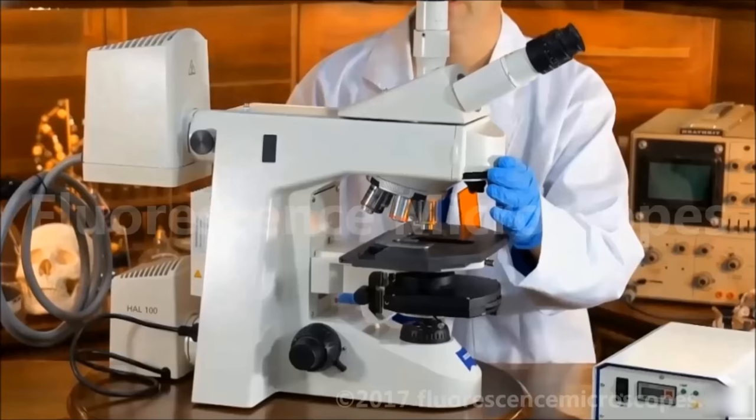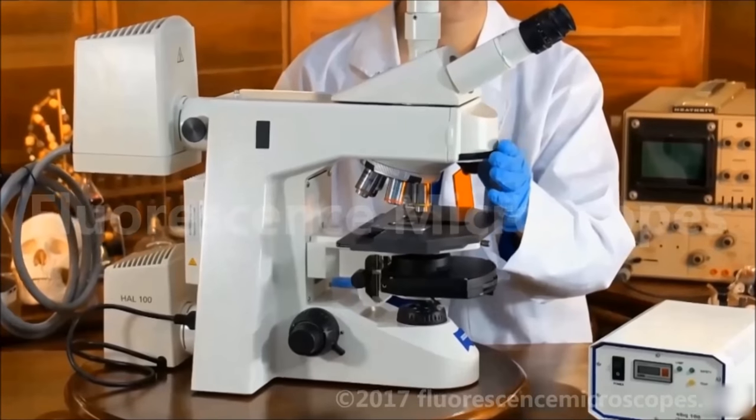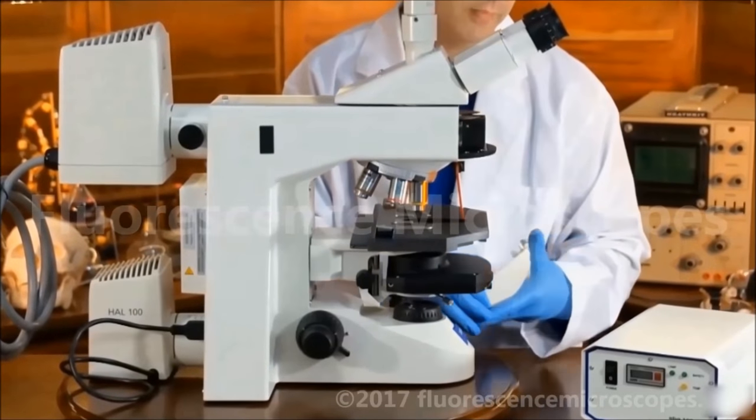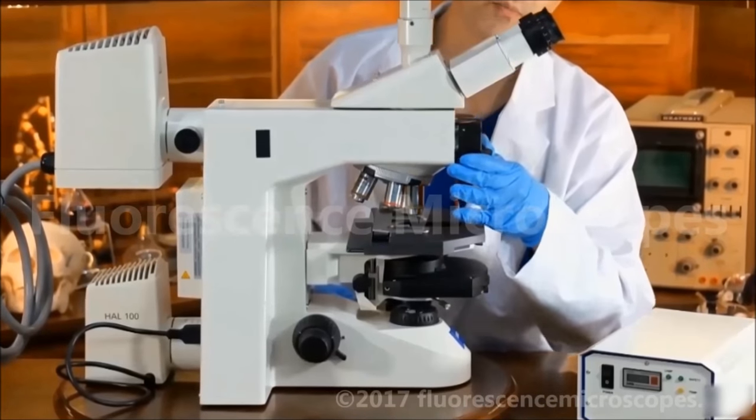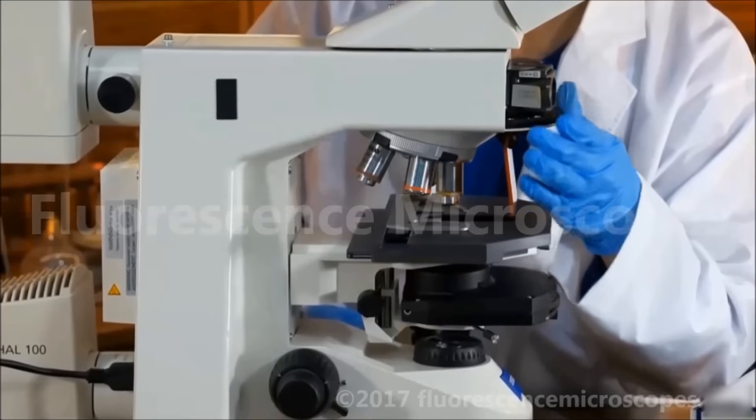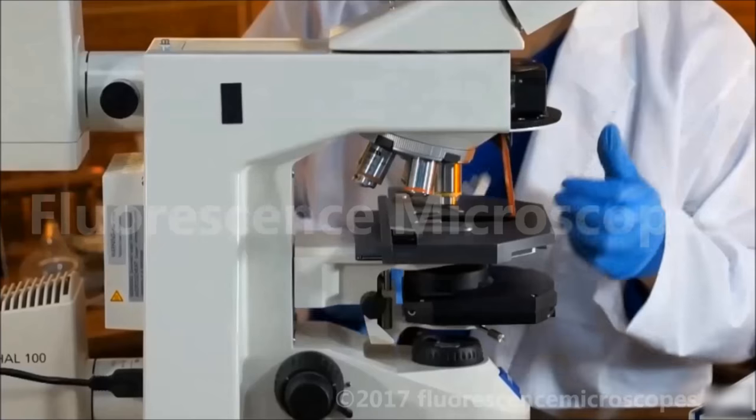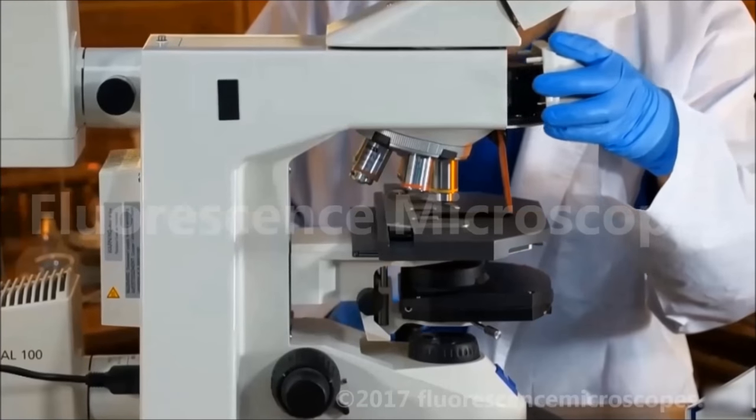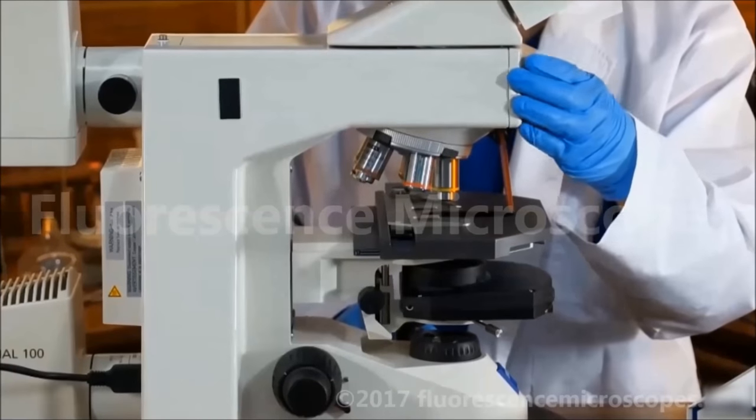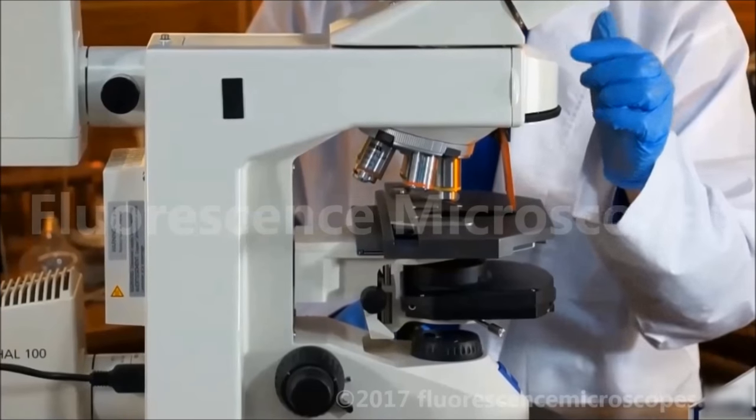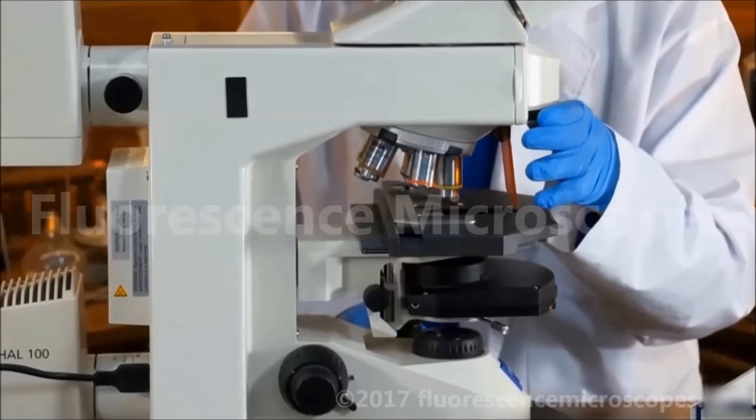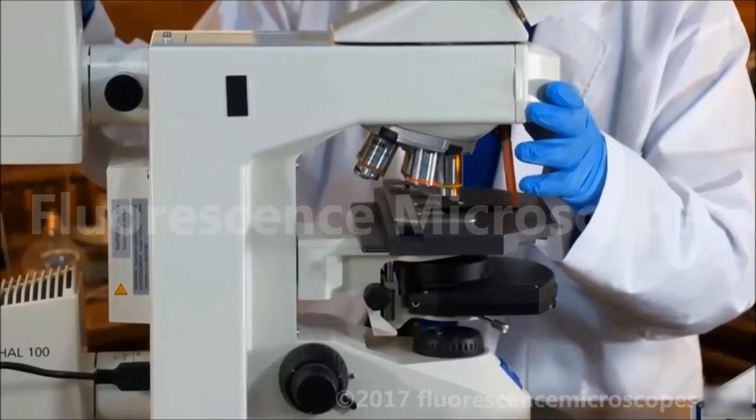Next, we have fluorescence cubes, dichroic cubes, inside the cube holder. There are 3 cubes plus a dark field. The dark field setting is also good for bright field and phase, so bright field, phase, dark field all in one setting, and the others all have dichroic filter cubes for the fluorescence.